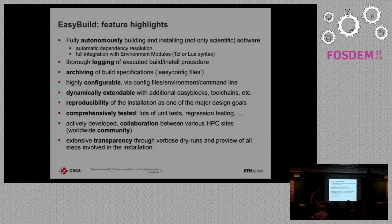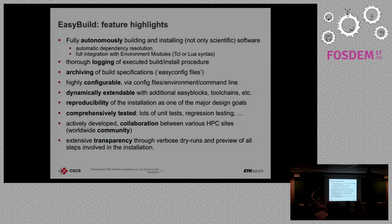The main features of EasyBuild: you have autonomous building and installing of software. You also have logging, so you don't need to worry about saving output — you'll find the installation logs automatically. You have archiving of build specifications, so every time you build from a recipe, you have a copy of that recipe saved so you know you can redo it. This is one step toward achieving reproducibility.